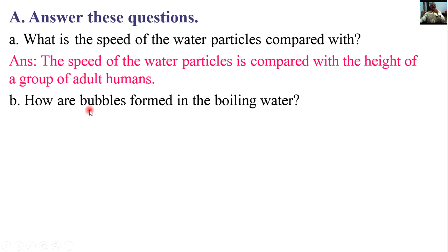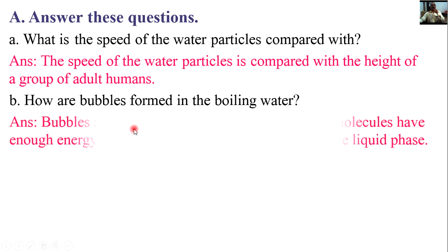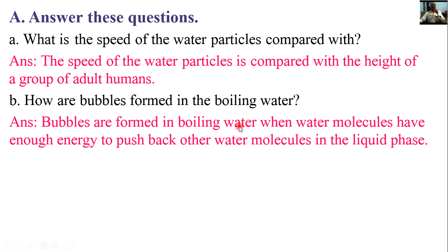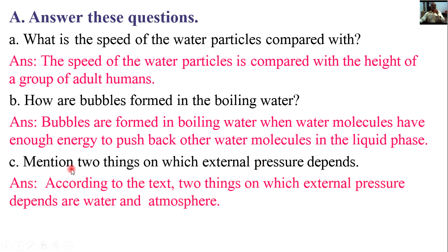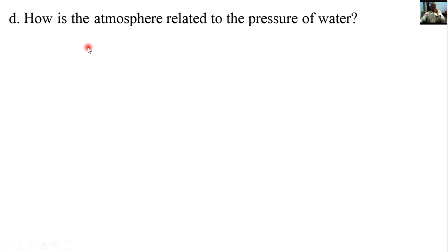How are bubbles formed in boiling water? Bubbles are formed in boiling water when water molecules have enough energy to push back other water molecules in the liquid phase. Mention two things on which external pressure depends. According to the text, two things on which external pressure depends are water and atmosphere.